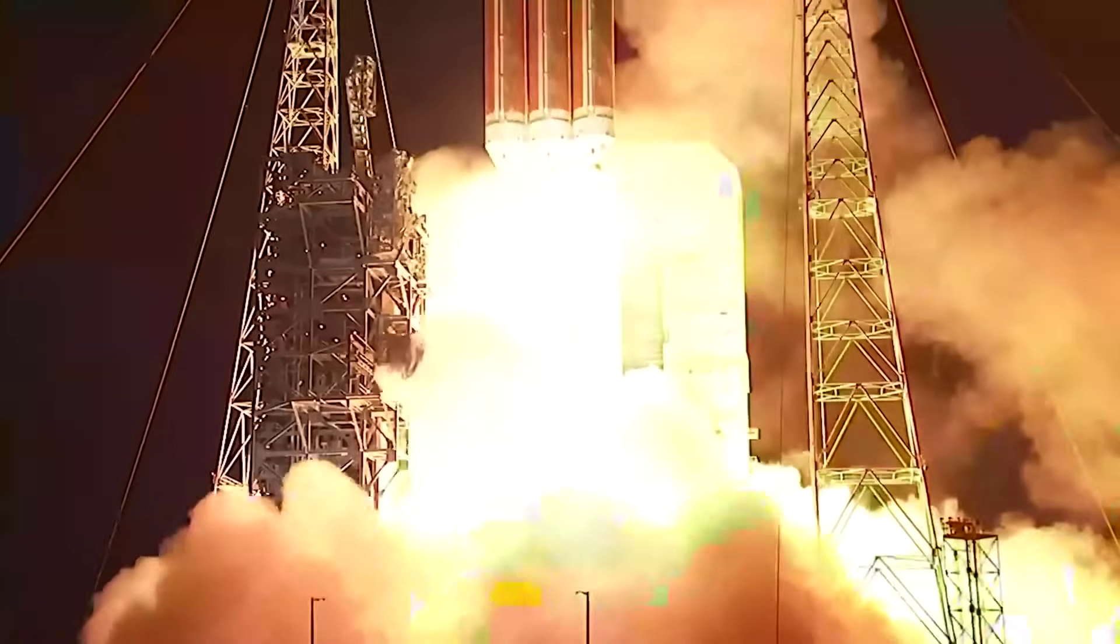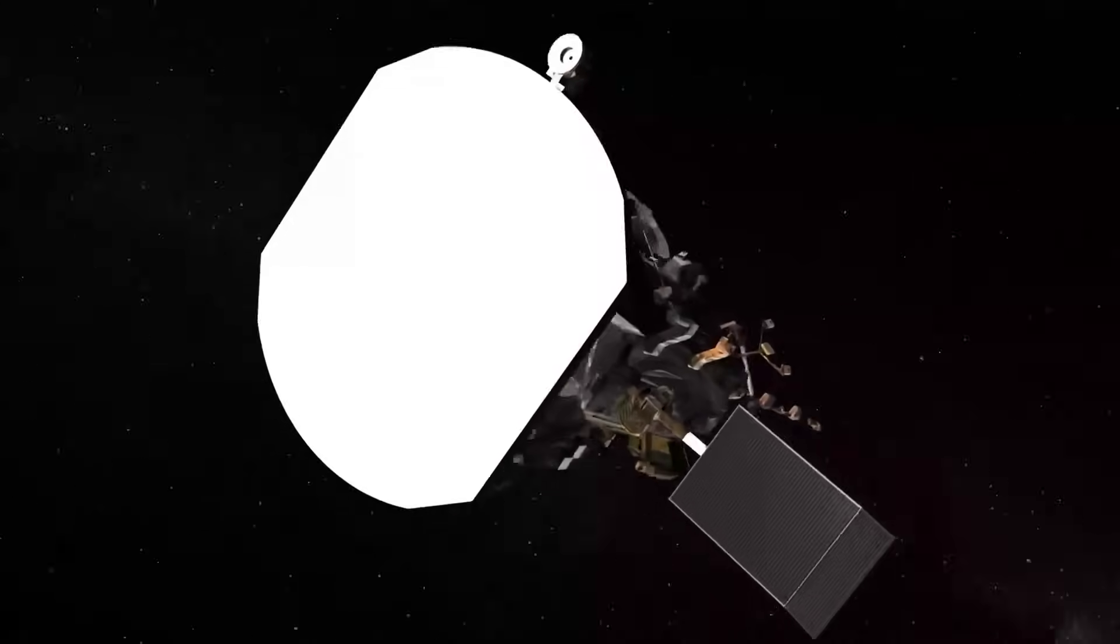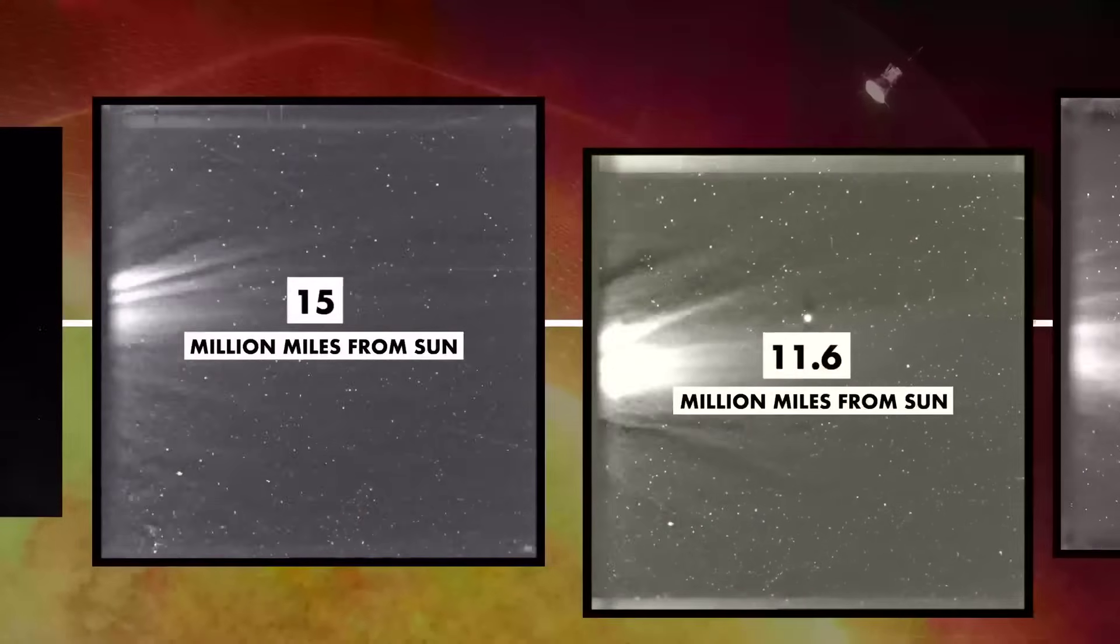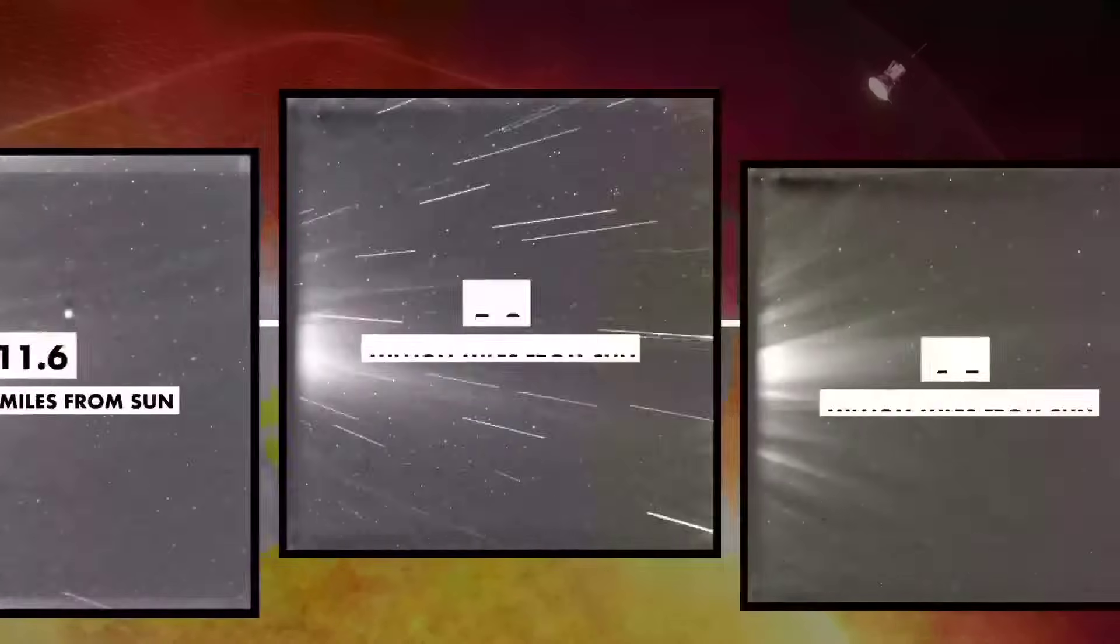Lift off of the mighty Delta IV heavy rocket with NASA's Parker Solar Probe. Ever since NASA's Parker Solar Probe launched into space in 2018, it has been circling closer and closer to the sun and taking images along the way.